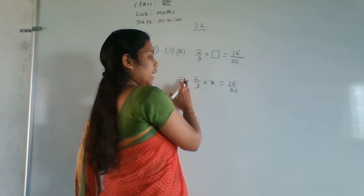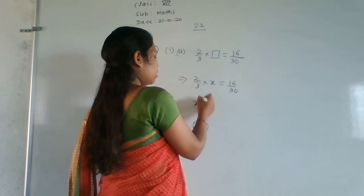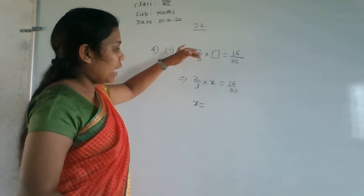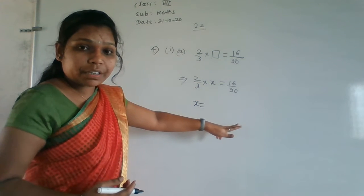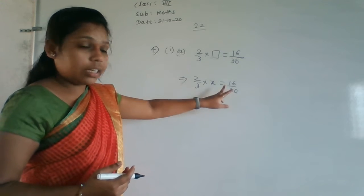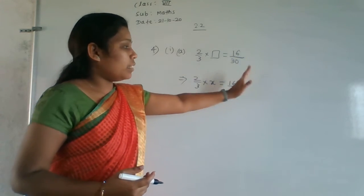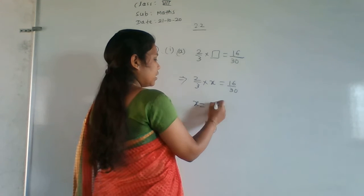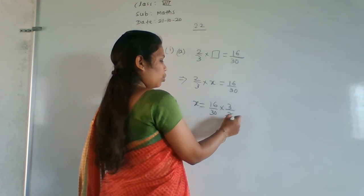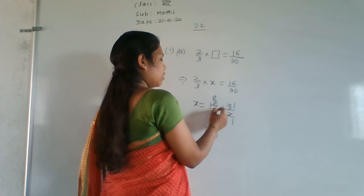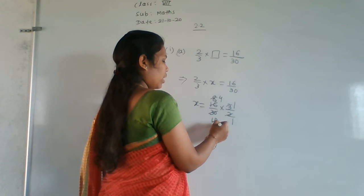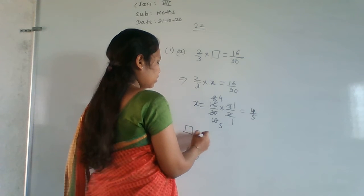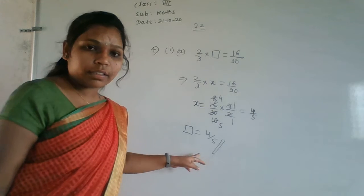So x = 16/30 × 3/2. Cancel 2 and 30: 2 ones are 2, 2 fifteens are 30. Cancel 16 and 2: 2 eights are 16. Cancel 3 and 3. Remaining: 4×1=4 in numerator and 5×1=5 in denominator. The box value x = 4/5. When a fraction moves across the equals sign, multiplication becomes division — i.e., 2/3 becomes 3/2 (reciprocal).